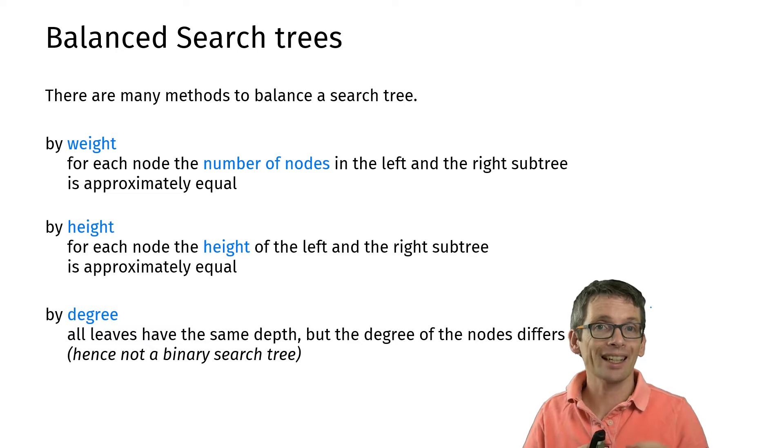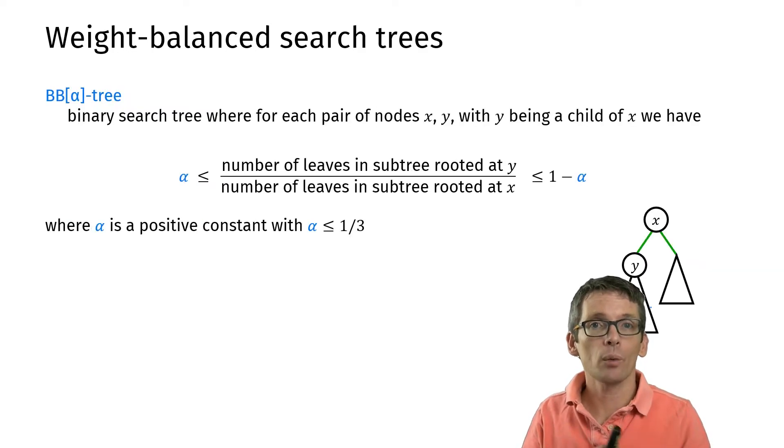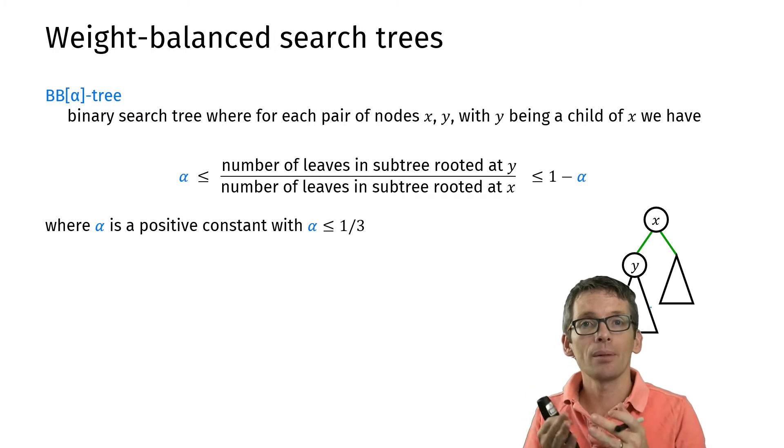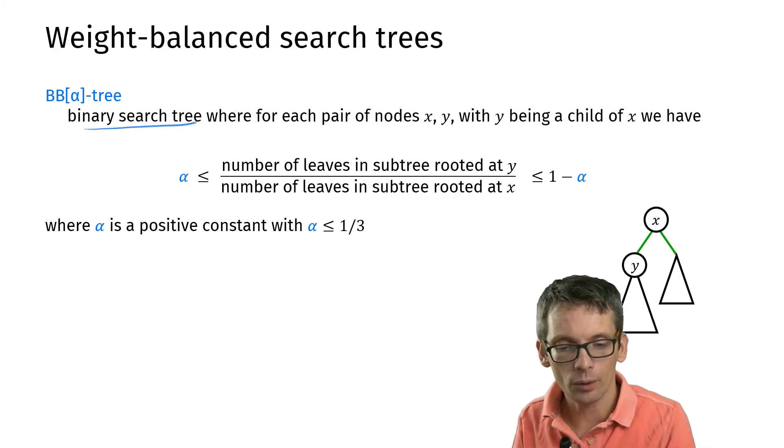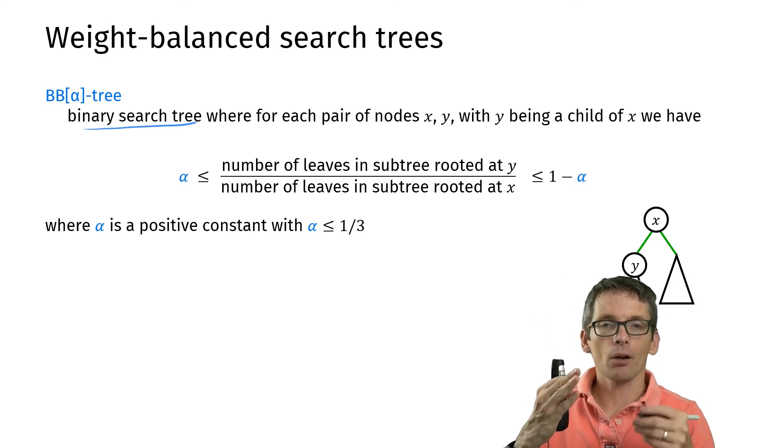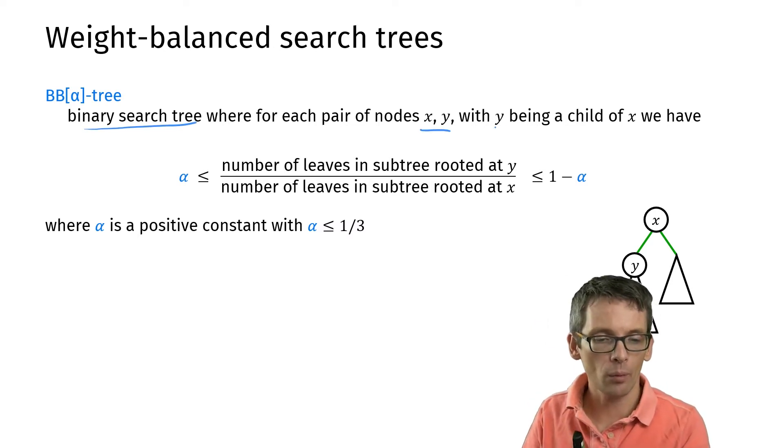Now let's have a look at an example for each of these. So an example of a weight balanced tree is a BB(α)-tree. So what does that mean? I have a binary search tree and for any pair of nodes x, y where y is a child of x, so like here,